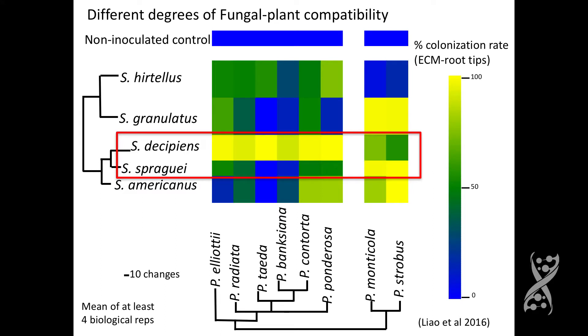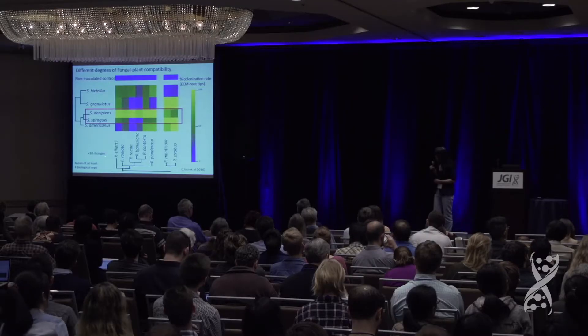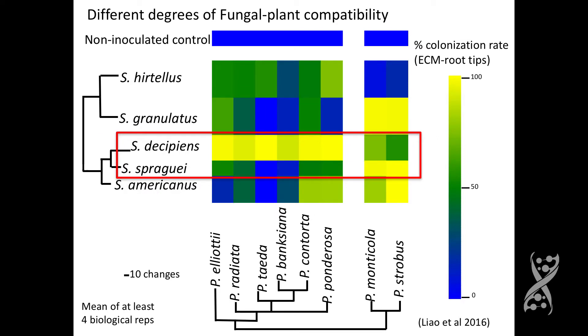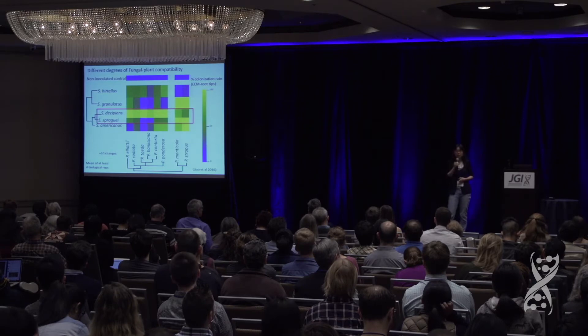From the colonization rates, this map shows different colonization rates of five Suillus species across eight Pinus species, with high colonization shown in yellow, middle in green, and low in blue. The colorful pattern indicates that different Suillus species exhibit different degrees of host specificity across different pine species. I'd like to point out two sister groups — S. decipiens and S. spraguei — which are phylogenetically very close with high genomic homology. However, their colors are opposite, indicating they have distinct host specificity and preference. This suggests host specificity evolved very recently compared with other genes involved in symbiotic efficiency.